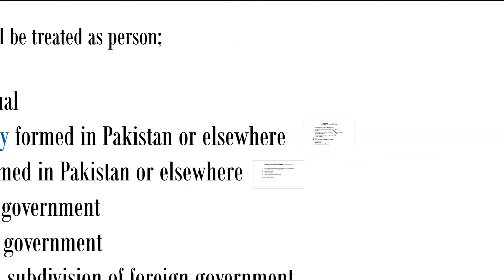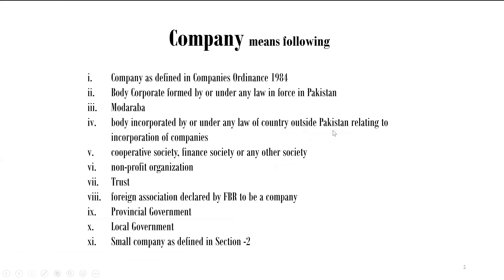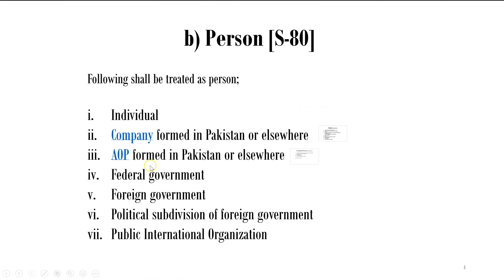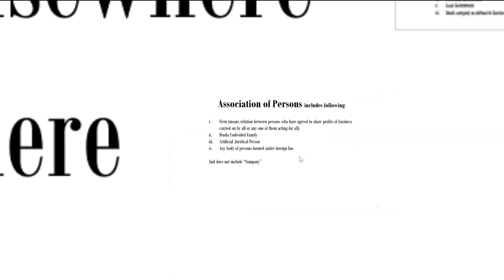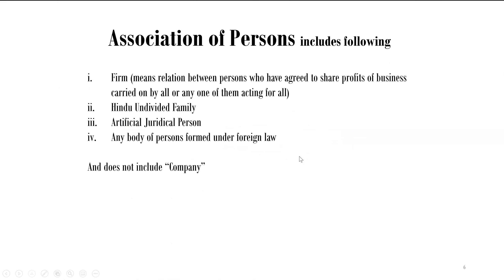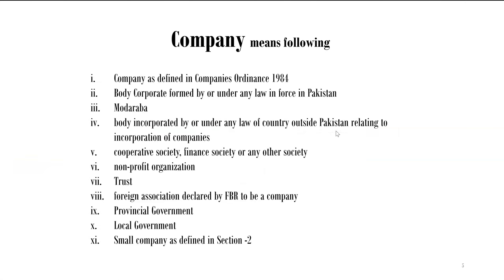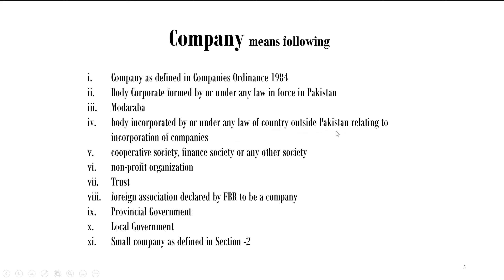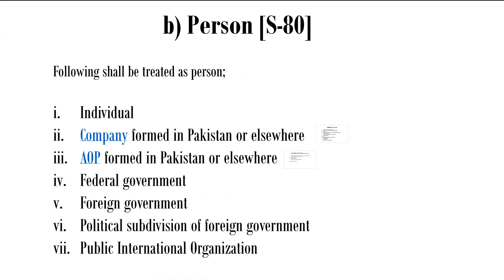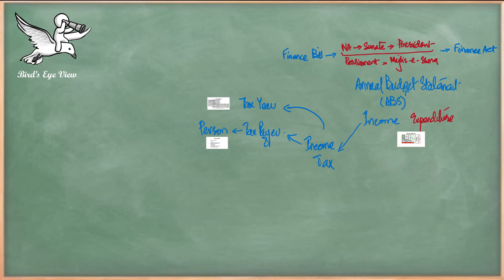There are also sub-types included within company, and similarly, within the Association of Persons there are other types of persons included. The rationale is that whatever AOP taxation rules apply, they apply to those included persons as well. The same logic applies to the company category.